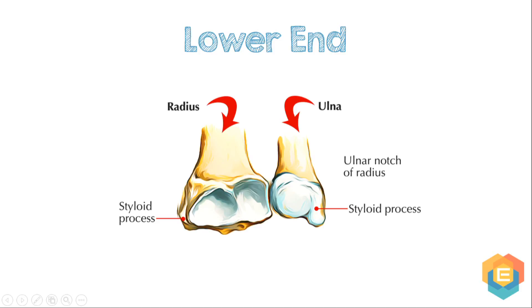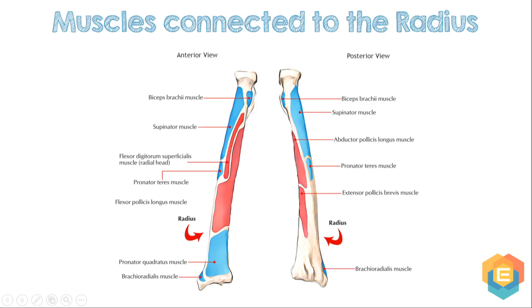The details of borders and surfaces of the shaft and lower end are well discussed in the article. Let us now discuss the various muscles attached to the radius bone. Flexor pollicis longus, flexor digitorum superficialis radial head, abductor pollicis longus, and extensor pollicis brevis mark their origin from the radius bone. On the other hand, the biceps brachii, supinator, and pronator muscles mark their insertions into the radius bone.